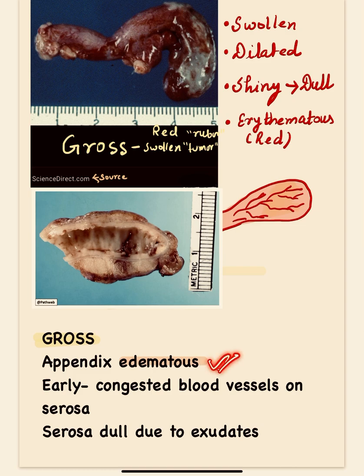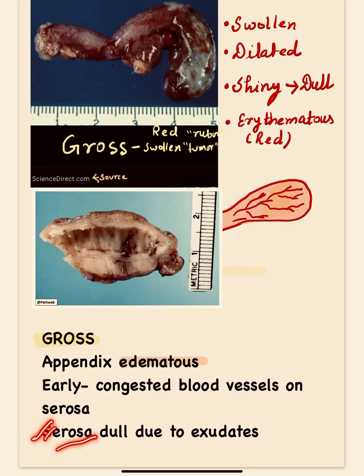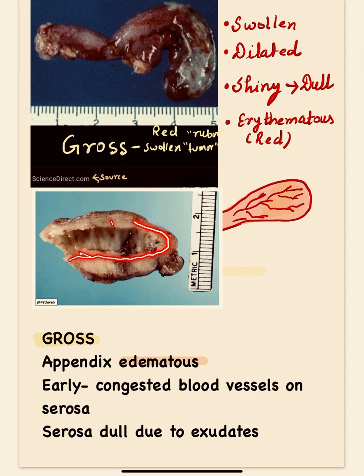So the appendix becomes edematous and swollen. Early on, congested blood vessels are visible on the serosa, which later becomes dull due to the purulent exudates. On the cut surface, the mucosa appears pale and shows areas of hemorrhage and mucosal ulceration.